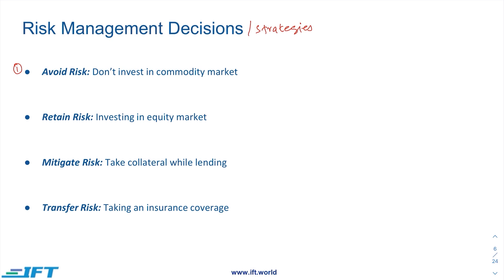The number one strategy generally adopted is to avoid risk altogether. This is considered one of the simplest strategies because you don't have to do anything. For example, if you think the commodity market is very risky and extremely volatile, and you don't have direct exposure in commodities, you can decide to avoid the risk by not investing in the commodity market.